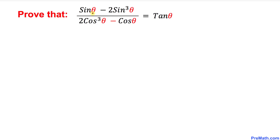We have sin theta minus 2 sin cube theta, all divided by 2 cosine cube theta minus cosine theta, and this equals tangent theta.